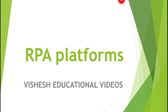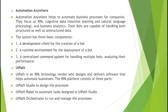Now I am going to explain what are the different types of RPA platforms that can be used to automate your process. The first platform is Automation Anywhere. This platform helps to automate business processes for companies, especially focusing on RPA, cognitive data, machine learning, natural language processing, and business analytics. Their bots are capable of handling both structured and unstructured data.